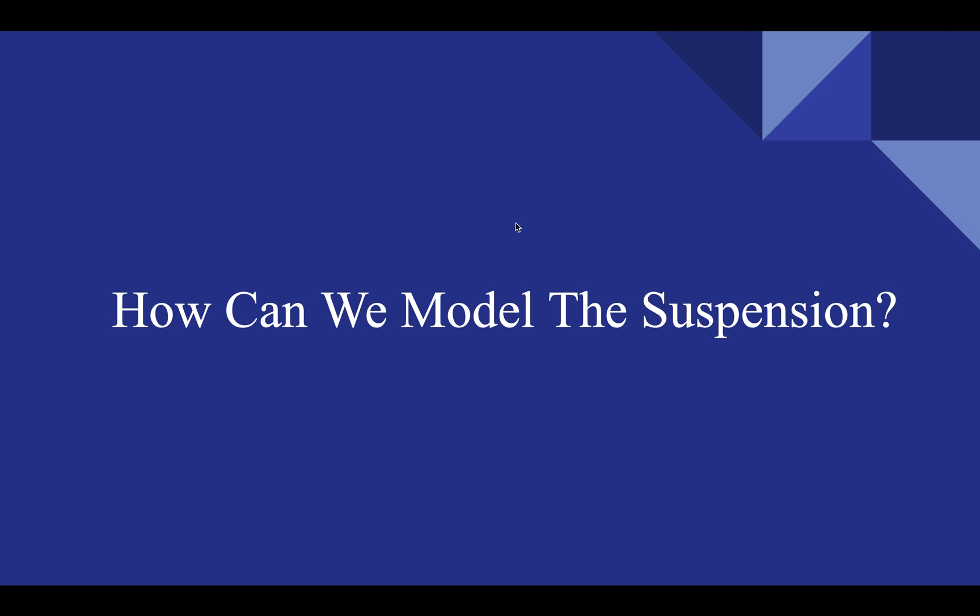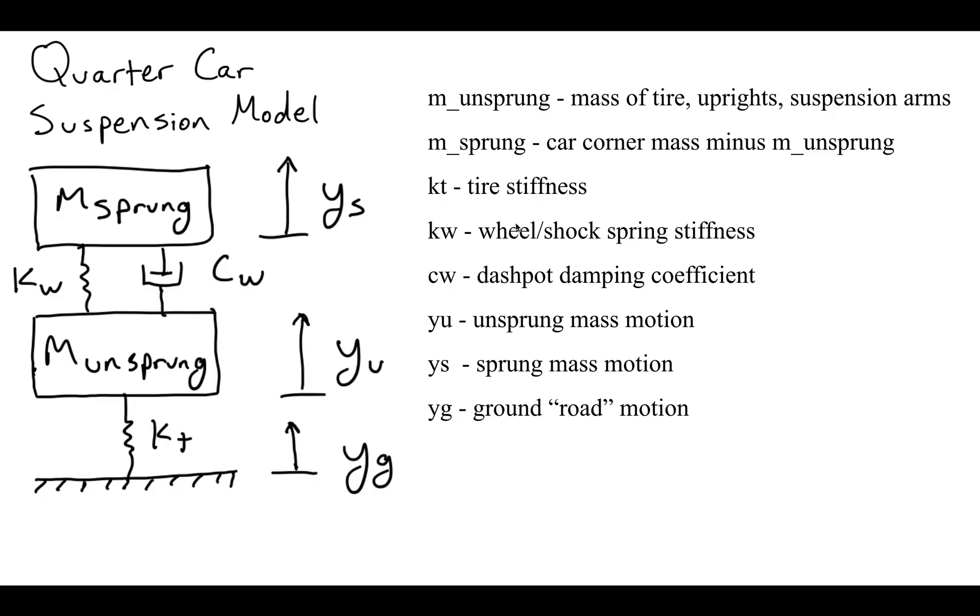One of the most important things we're going to do is model the suspension. We're going to take a look at something called the quarter car suspension model. Basically you're able to decompose the suspension system into a quarter of the total suspension. You have your body of the car, which is your mass sprung, and you separate it from your mass unsprung, which is the mass of the tire, the structural supports, and the suspension arms. So you have KT, which is the stiffness of the tire itself, and then you have KW, which is the stiffness of those coil springs, shocks, and the wheel.